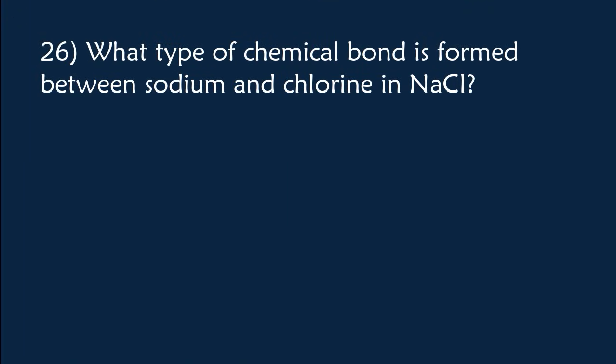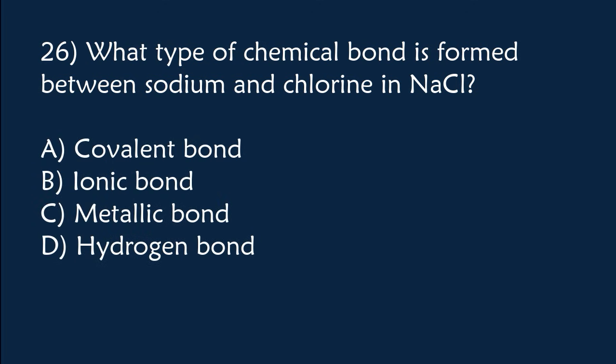Which type of chemical bond is formed between sodium and chlorine in NaCl? A) Covalent bond, B) Ionic bond, C) Metallic bond, D) Hydrogen bond. The correct answer is Option B, ionic bond.